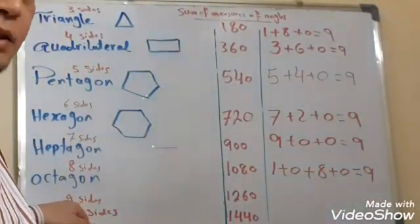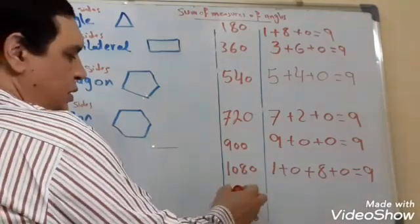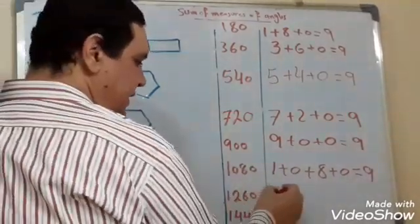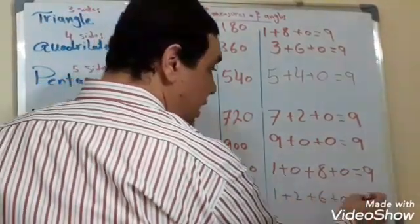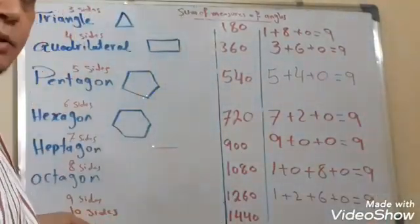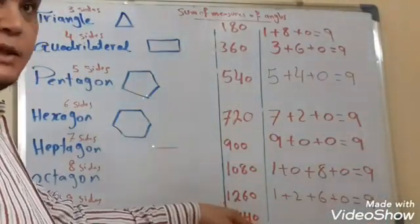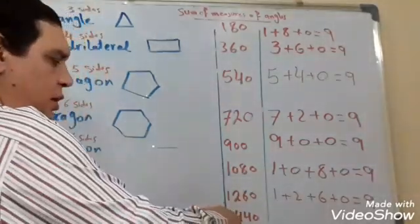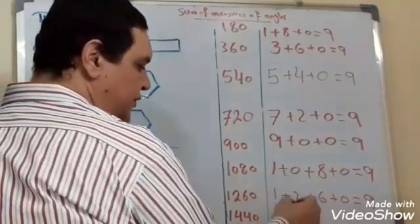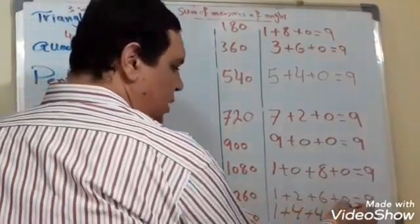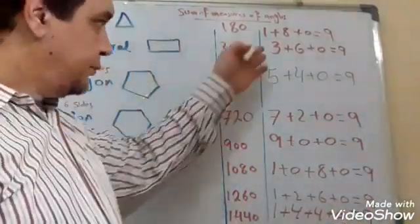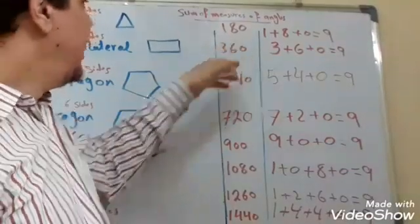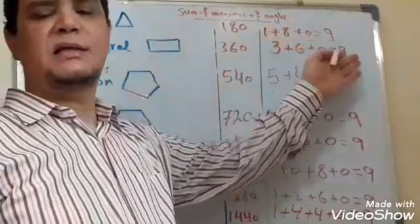After that, the nonagon with nine sides — the measure of all angles is 1260. If we add: 1 plus 2 plus 6 plus 0 equals also nine. Last, the decagon with ten sides — all angles in the decagon sum to 1440. When we add: 1 plus 4 plus 4 plus 0 equals also nine. In all cases, for all polygons, the digit sum of the angle measure is nine.